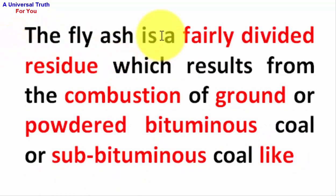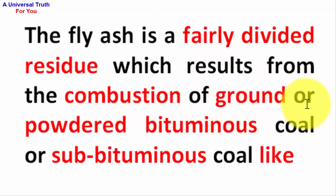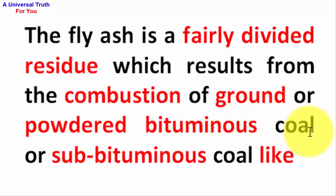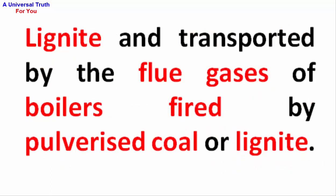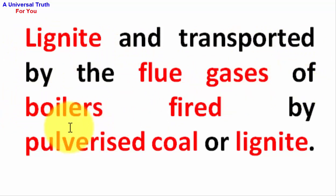Fly ash is a finely divided residue which results from the combustion of ground or powdered bituminous coal or subbituminous coal like lignite, and is transported by the flue gases of boilers fired by pulverized coal or lignite.